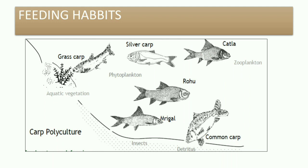In carp polyculture — meaning culture of more than two species — we have Indian Major Carp (IMC) and Exotic Carp together. Indian Major Carps are Catla, Rohu, and Mrigal. Exotic Carps are Silver Carp, Grass Carp, and Common Carp. Catla is a surface feeder, Rohu is a mid-column feeder, and Mrigal is a bottom feeder. Similarly, Silver Carp is a surface feeder, Grass Carp feeds on aquatic vegetation, and Common Carp is a bottom feeder.